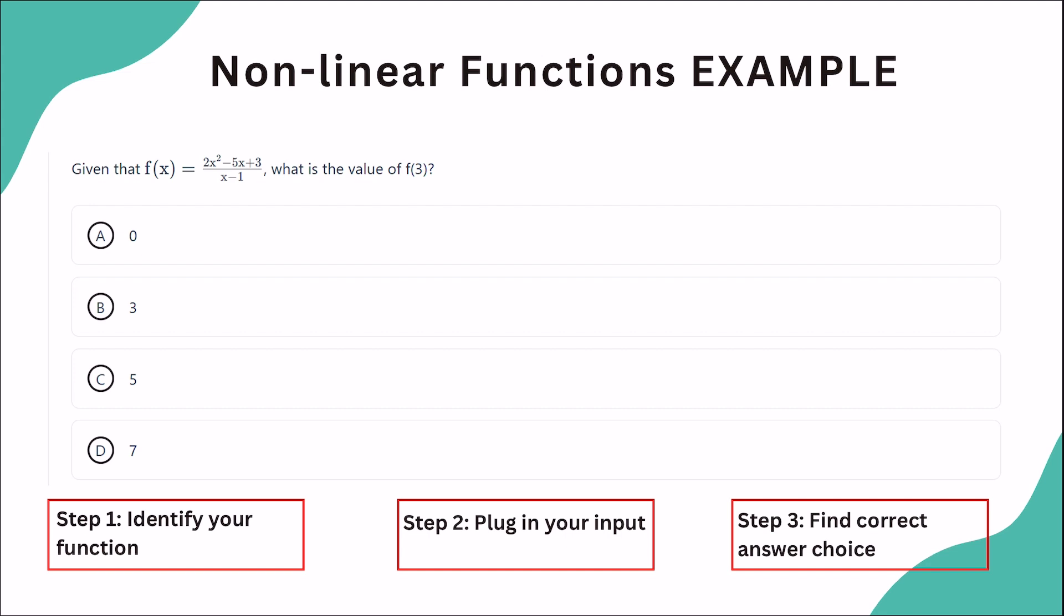So here's an example. Given that f of x equals 2x squared minus 5x plus 3, divided by x minus 1, what is the value of f of 3? Well, let's write f of 3, and we identify that this is our function, we're plugging in our input, and our input is 3, because that's what they're putting inside the function, so for every x in the equation, we're going to plug in 3.